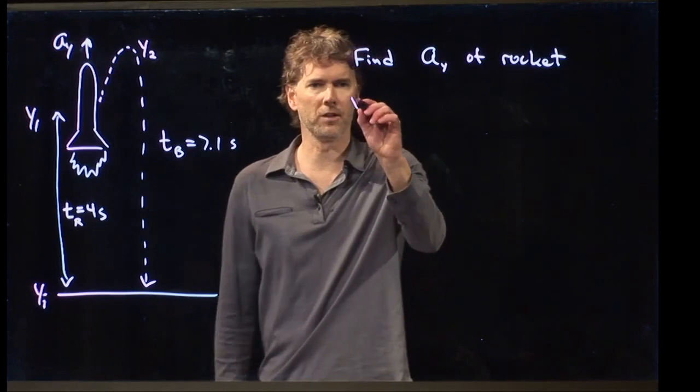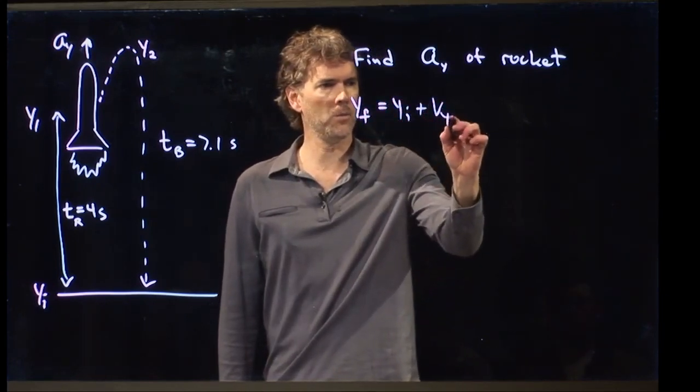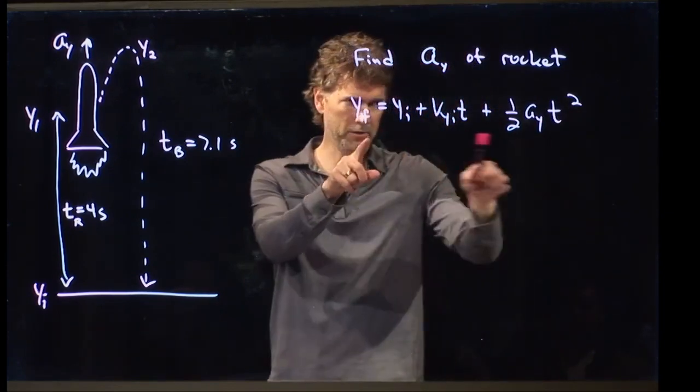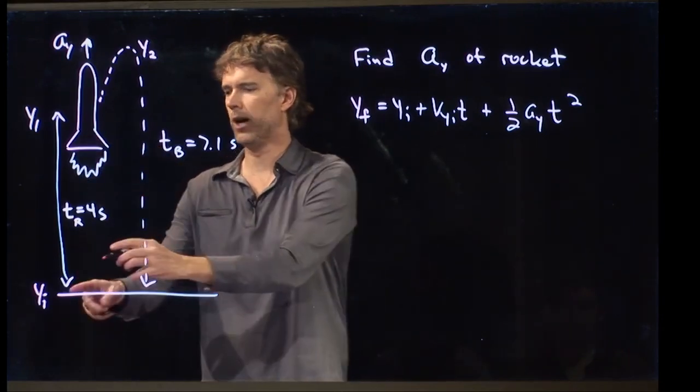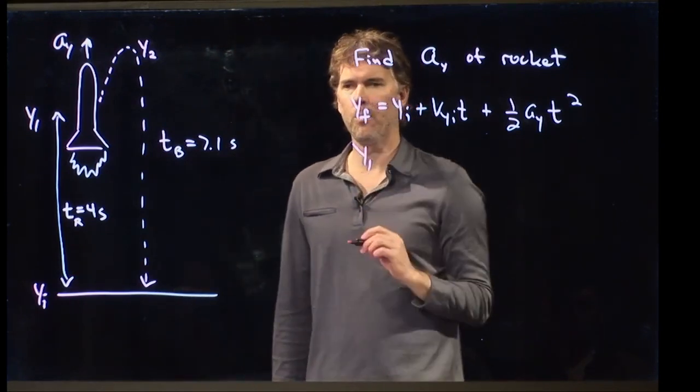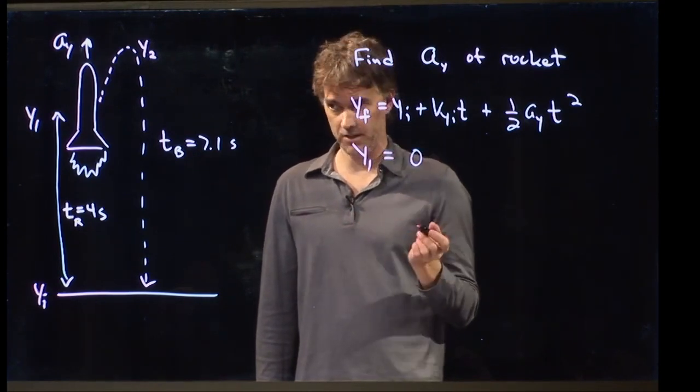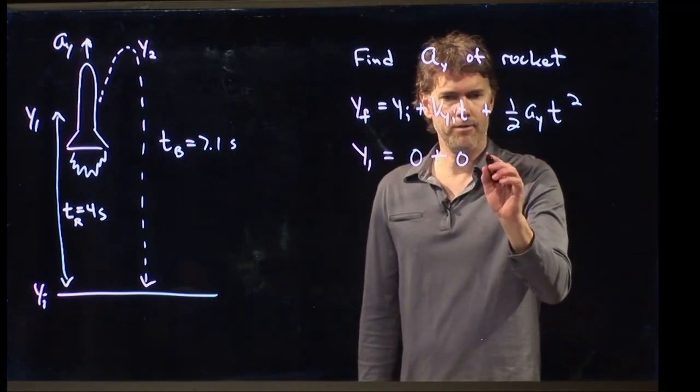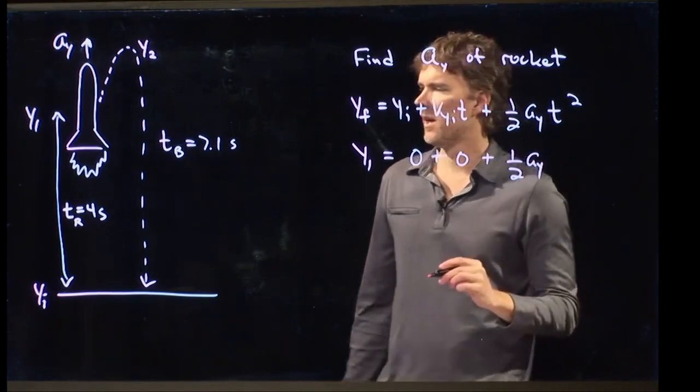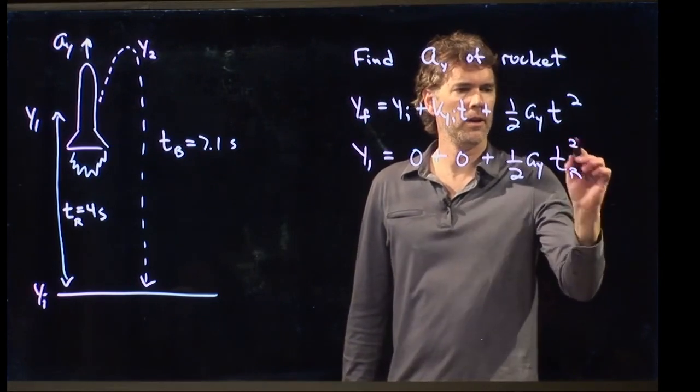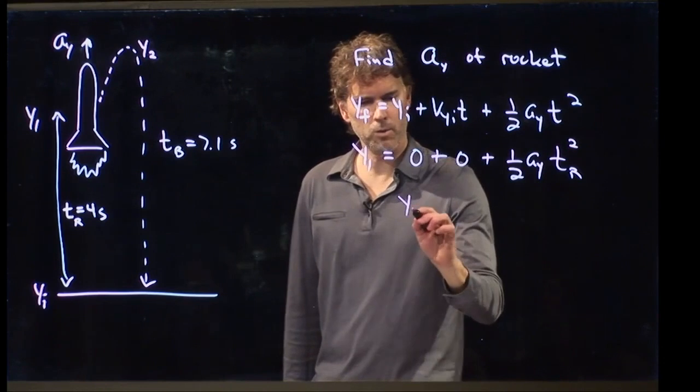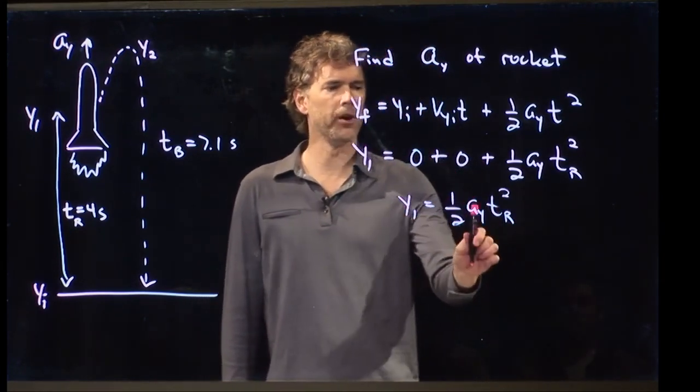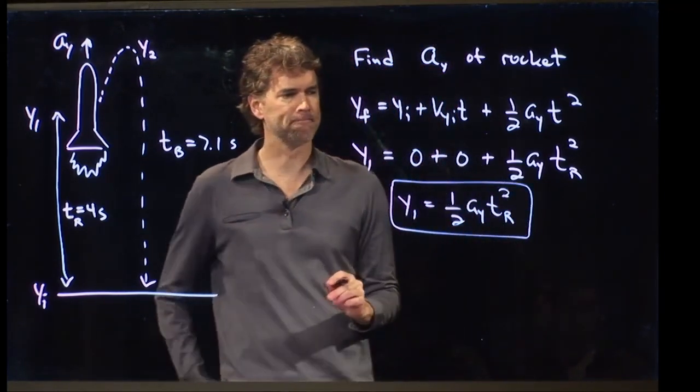So first off, we have a nice equation that looks like this: yf equals yi plus vyi times t plus 1 half a sub y t squared. Now, if we're going to apply this equation to the rocket going up, what can we say? Well, after four seconds, it has reached a height y1. It started at a height of 0. It started from rest. Rockets typically start from rest on the launch pad. So that's 0. And now we have 1 half a sub y. That time, t sub r, is 4 seconds. So now we have one equation, but we still have two unknowns. We don't know y sub 1, and we don't know a sub y.